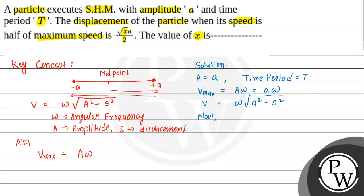Now, from the question, velocity v is equal to v_max divided by 2, because it is half. In this case, we need to find the displacement. So we can write: omega times square root of (a squared minus s squared) = a times omega divided by 2. The omegas cancel, and after cross multiplication: 2 times square root of (a squared minus s squared) = a.